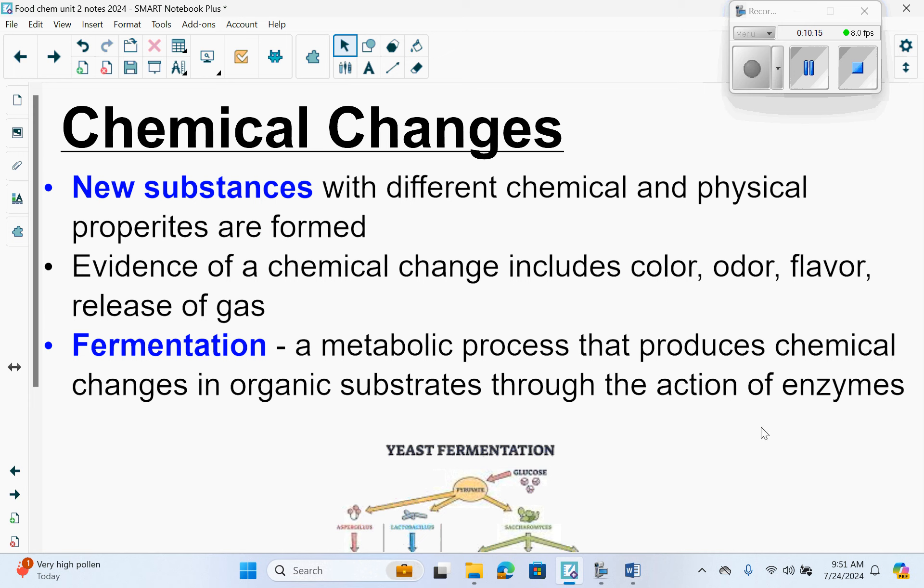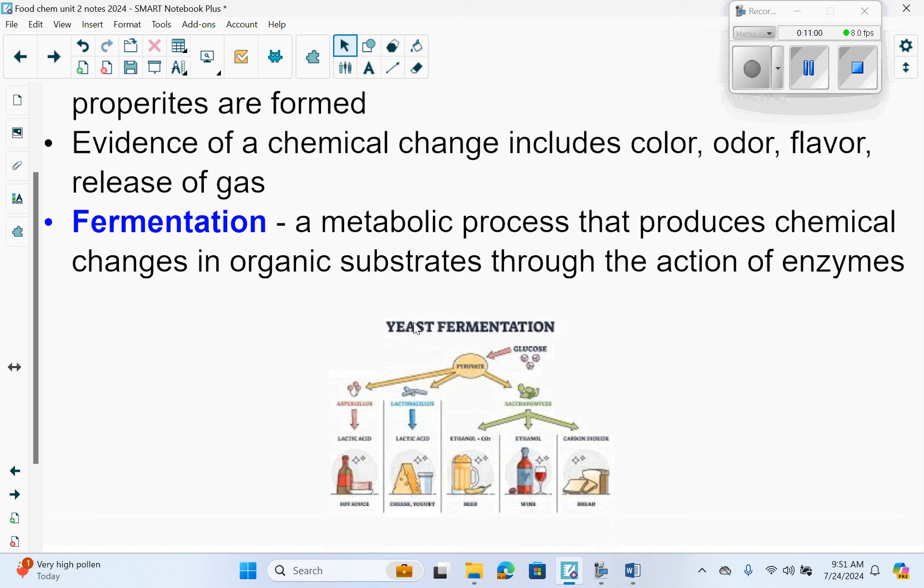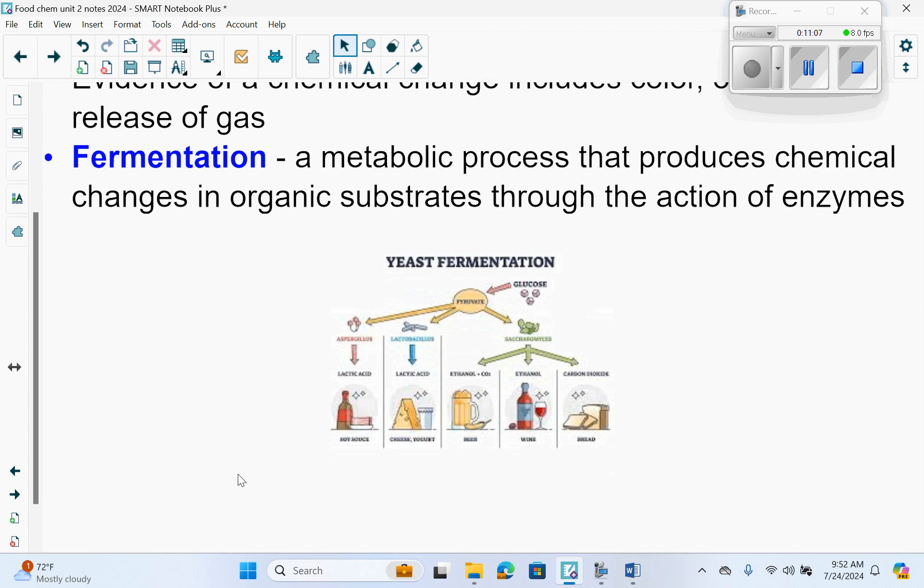Chemical changes produce new substances with different chemical and physical properties. Evidence of a chemical change includes color, odor, flavor, or release of gas. A common chemical change in the food industry is fermentation. It's a metabolic process that produces chemical changes in organic substrates through the action of enzymes. Enzymes are proteins and they have to work with substrates, very specific ones, in order to function. We will talk about that in later chapters. Yeast can undergo changes to make things like bread, alcohol, or cheeses. It's very common in the food industry.